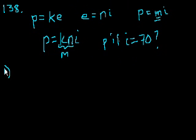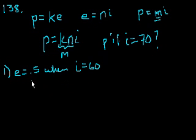So statement number one. e is equal to 0.5 when i is equal to 60. Well, we can definitely use this information to figure out what n is. But that by itself isn't going to help us because we can figure out what n is. And then once we know what n is, we can figure out what e is when i is 70. Because we'll put 70 here times whatever we figure out n is, and we'll get e.